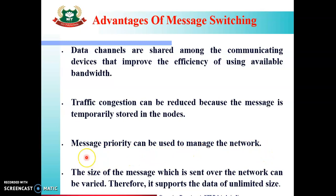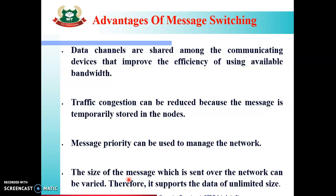Message priority can be used to manage the network. Among the many devices sharing the communication channel, we can decide which message gets priority, and through this facility we can manage the network traffic. The size of the message which is sent over the network can be varied; therefore it supports unlimited data. Messages can have varying sizes — some with less data volume and some with more — so we can send a variety of messages.